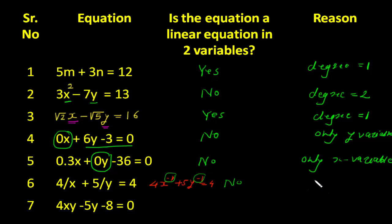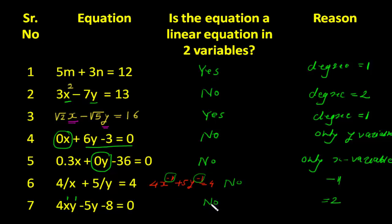In the last example: 4xy minus 5y minus 8 is equal to 0. Here for x the degree is 1 and for y the degree is 1, but if we add the degrees of x and y in the term xy, the degree becomes 2. Therefore this equation is also not a linear equation in two variables.